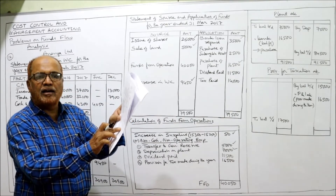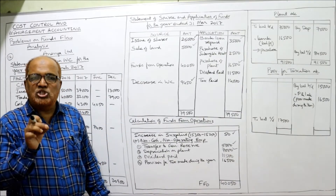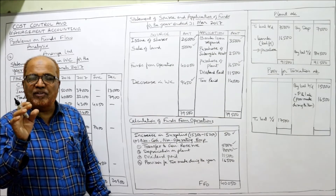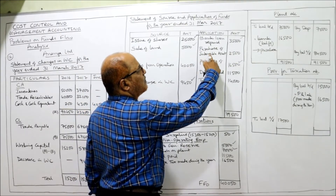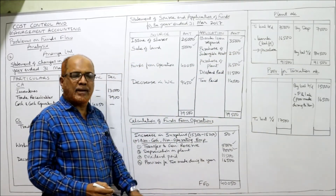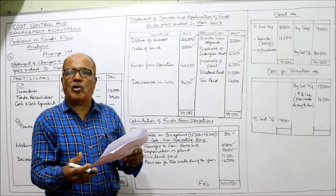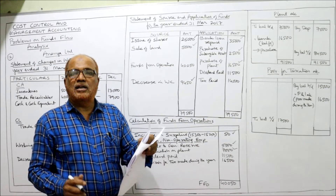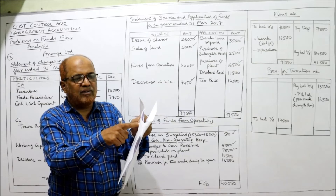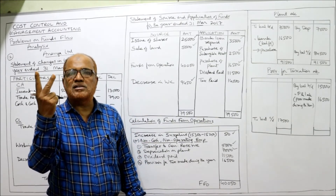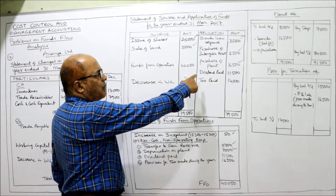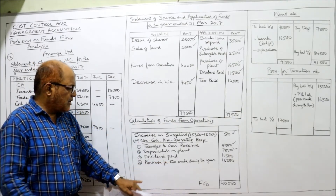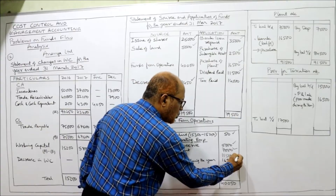Tangible fixed assets are complete. Intangible fixed assets: last year nil, current year 2,05,000 — so intangible fixed assets were purchased during the current year. Purchase of intangible assets 2,05,000 is taken on the application side. Then dividend paid: given in the last adjustment as 11,500. It appears twice — first as an application (dividend paid 11,500) and again added back to profit as a non-cash non-operating item.